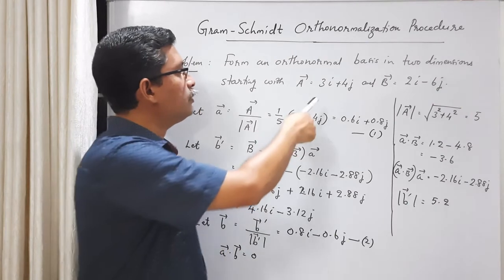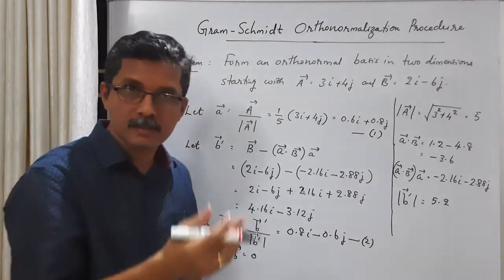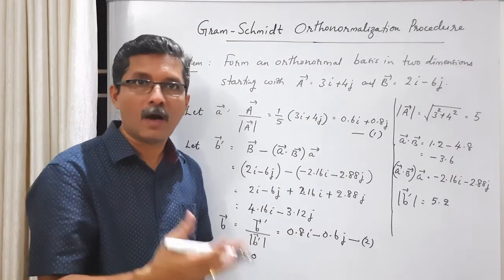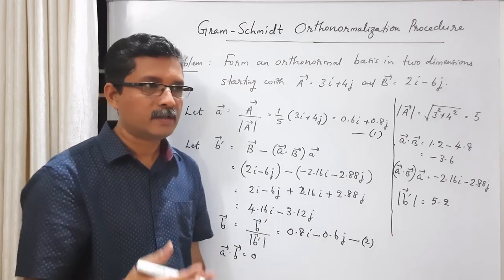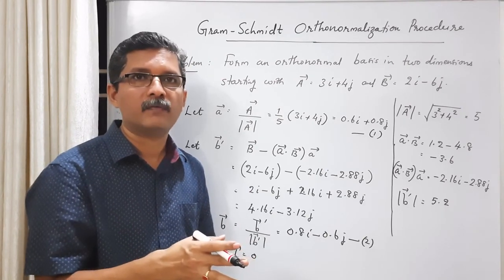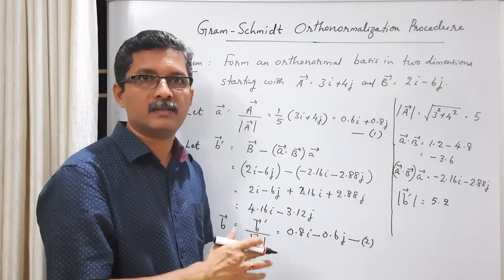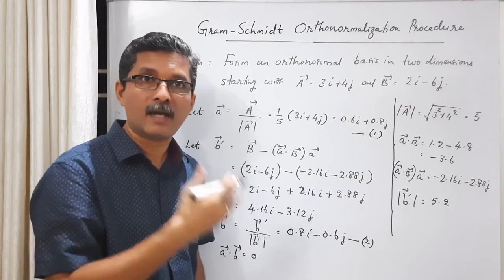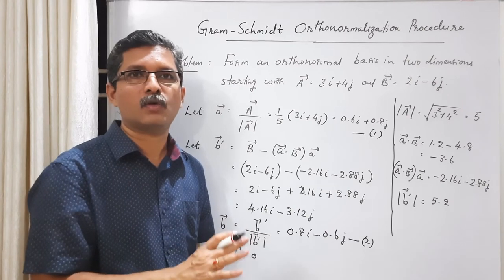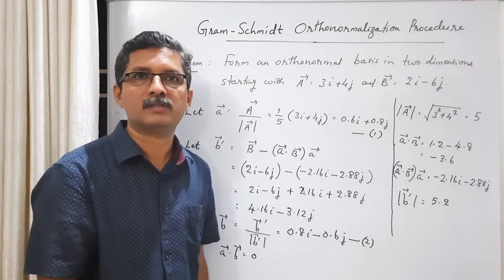This is an illustration of the Gram-Schmidt orthonormalization procedure using spatial vectors familiar to us. But if we have matrices, n-tuples, or functions, this procedure will work in the same way. You may have studied Gram-Schmidt orthonormalization in the context of functions when studying Sturm-Liouville theory and differential equations — that idea is the same as this one, because functions can be treated as vectors. Today we discussed a general procedure for getting an orthonormal set of vectors, applicable to many quantities including functions.